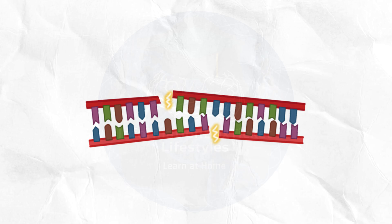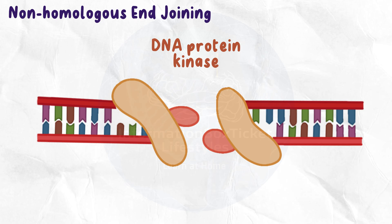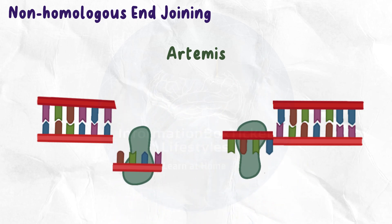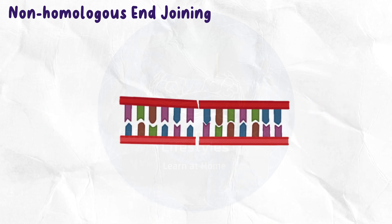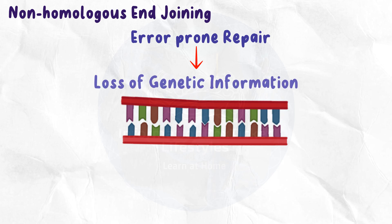There are two primary repair mechanisms for double-strand breaks. The most prevalent is non-homologous end joining, which involves a protein complex called DNA protein kinase attaching to both ends of the damaged DNA. It then enlists a protein known as Artemis — named after the Greek goddess — to trim off the single-stranded ends, similar to smoothing the broken ends of a pencil with sandpaper. The two ends of DNA are then joined by a ligase enzyme. Since Artemis cuts off some nucleotides, non-homologous end joining is an error-prone repair that leads to a loss of genetic information.